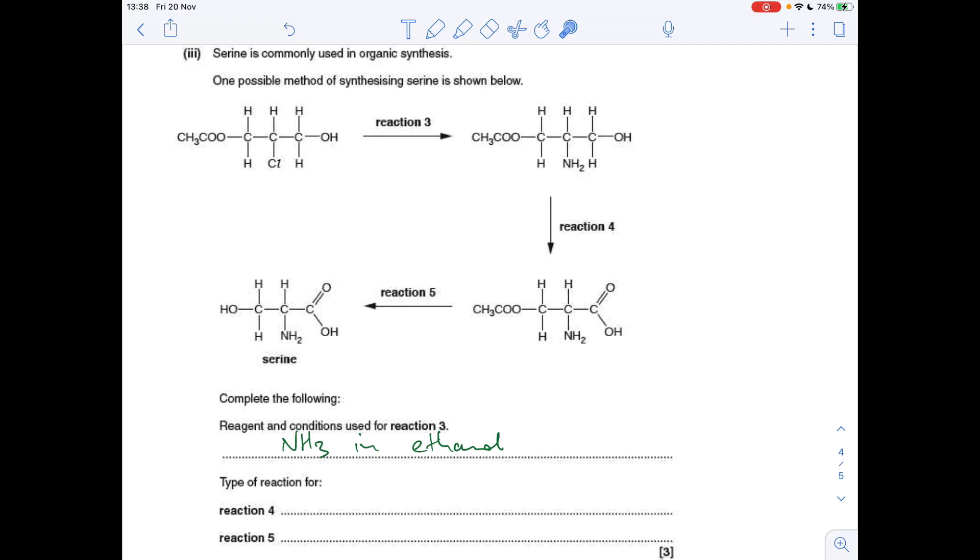And two reaction types. Reaction four, look at what's changed. We've gone from an alcohol to a carboxylic acid. So that's oxidation. And reaction five, we've gone from the ester group to an alcohol group. So effectively, this is broken off here. So it's been hydrolyzed.